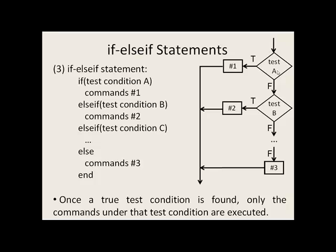However, if a is false, we'll test to see if b is true. If b is true, we'll do the second set of commands and then our code will continue. If it's false, we'll keep going down the list of test conditions until we find one that is true. If none of them are true, we'll execute the commands after the else. Notice how even if test conditions a and b are both true, we'll only execute one set of commands.